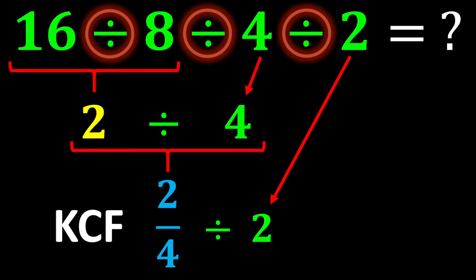K stands for keep, C stands for change, and F stands for flip. Here's how it works. Keep the first number as it is. Change the division sign to multiplication. Flip the second number. Take its reciprocal.